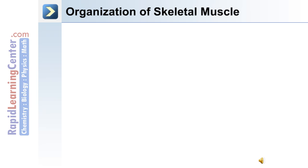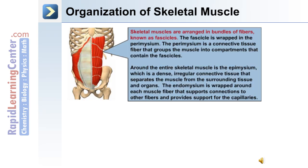The organization of skeletal muscle: skeletal muscles are arranged in bundles of fibers known as fascicles. The fascicle is wrapped in the paramycium, a connective tissue fiber that groups the muscle into compartments containing the fascicles. Around the entire skeletal muscle is the epamycium, a dense irregular connective tissue that separates the muscle from surrounding tissues and organs. The endomycium is wrapped around each muscle fiber, supporting connections to other fibers and providing support for the capillaries.